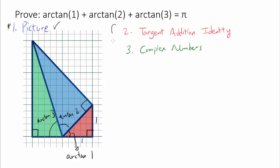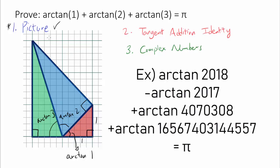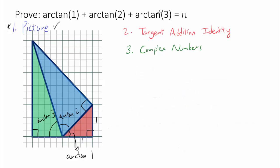You may ask why we need to care about the tangent addition identity and complex numbers when we have this beautiful proof using a picture. For this particular equation, using a picture works just fine. But for a more complicated equation, this approach won't work. If you encounter a similar expression using arc tangent in competition math or real life, it's not going to be this easy. So we need more systematic ways of evaluating a sum of arc tangents.